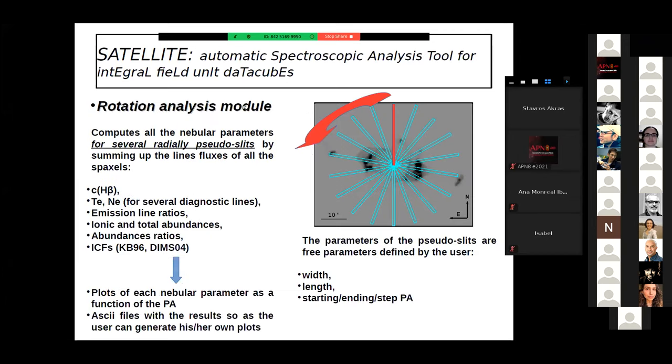More specifically, the rotation analysis module: the code computes a full spectroscopic analysis for one or several slits that are defined based on its width, length, and position angle, but then rotates the several slits from 0 to 360 degrees. So we can get a spectroscopic analysis, a 1D spectroscopic analysis for different position angles.